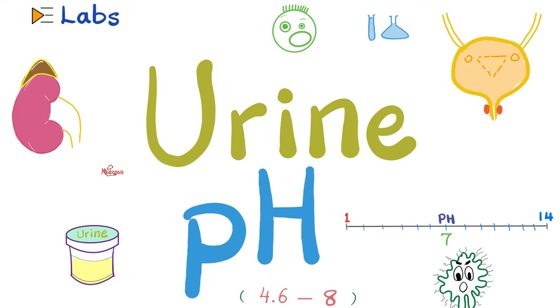As for today, let's talk about the pH of the urine. Why do you call it pH? It's the power of hydrogen, or the potentia hydrogena. It's all about powers and logarithms.